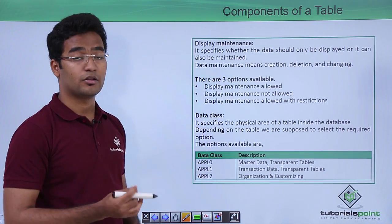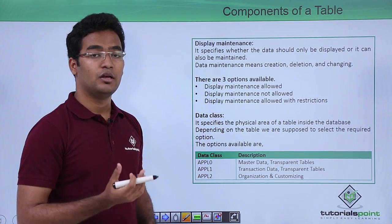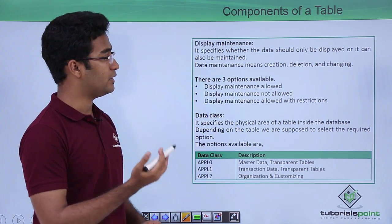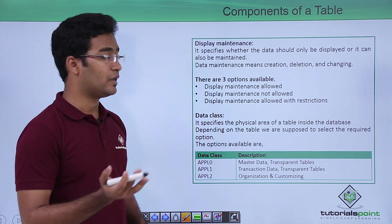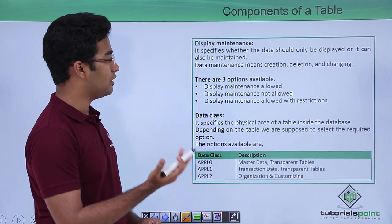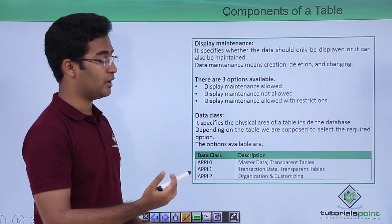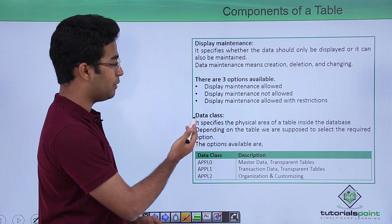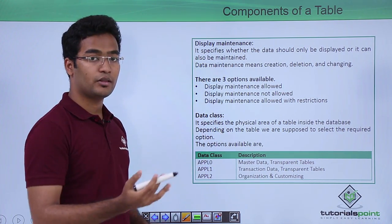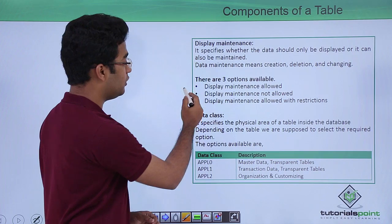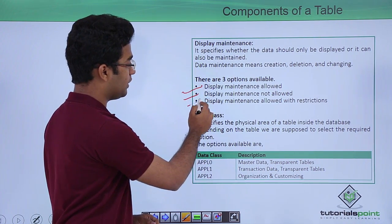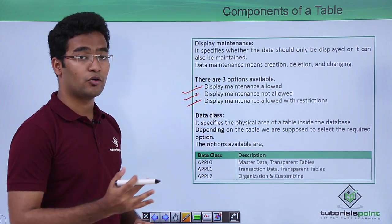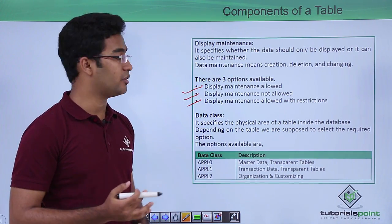Coming to display maintenance — this is another select option that appears. It specifies that the data should be displayed or that we can maintain it also. There are three options: display maintenance allowed (we can display and maintain it at the same time), display maintenance not allowed, and display maintenance allowed with some restrictions. These are the three available options we can select while creating a particular table. This covers the delivery class and the display maintenance.